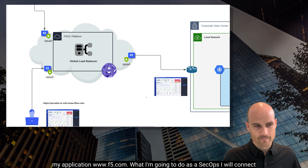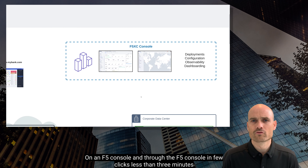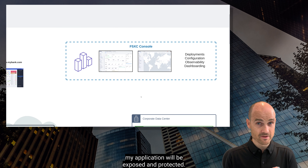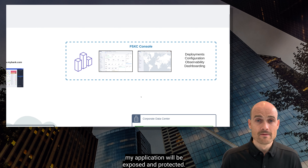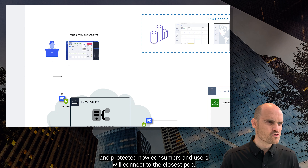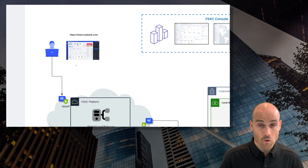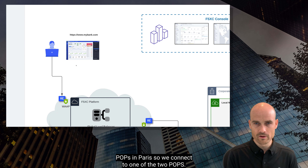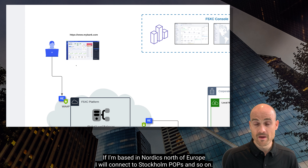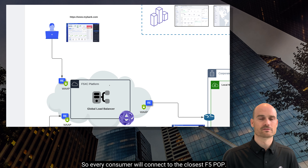To protect www.f5.com, as a SecOps engineer I will connect to the F5 console and, through the F5 console in just a few clicks — less than three minutes — my application will be exposed and protected. Once exposed and protected, consumers and users will connect to the closest POP. If I'm in Paris, we have two POPs in Paris. If I'm in the Nordics, I will connect to the Stockholm POP. Every consumer connects to the closest F5 POP.